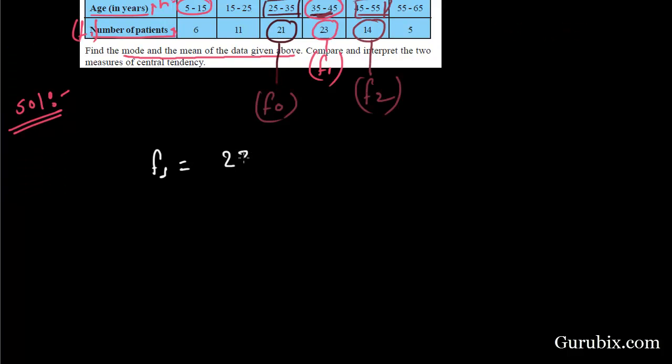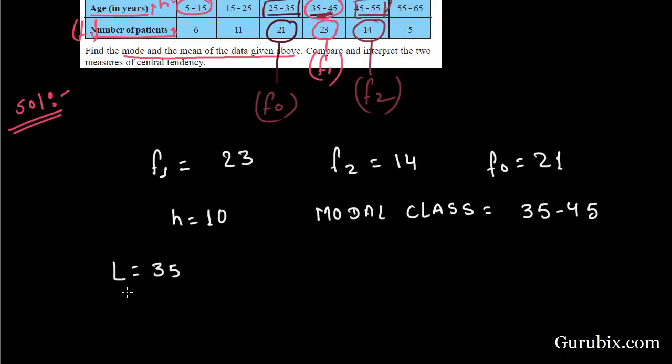F1 is 23, F2 is 14, F0 is 21, H is equal to 10, modal class is equal to 35 to 45, L is equal to 35. L is the lower limit of modal class. We can see 35 is the lower limit of modal class. So, L is 35.